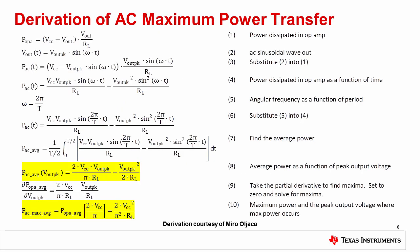The relationship for maximum average AC power transfer in an op amp is derived using calculus in a similar way to the DC condition. Again, understanding the calculus behind the derivation isn't critical, but it's important that you're able to use the results effectively.